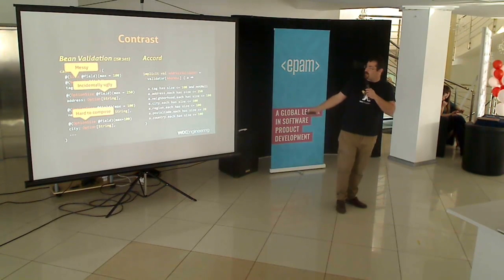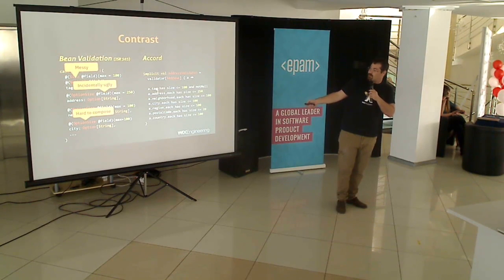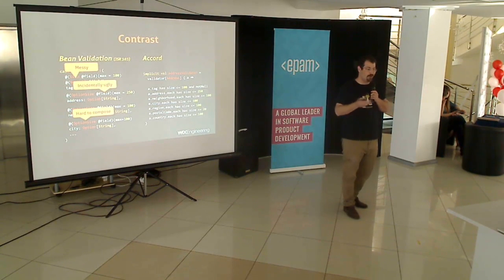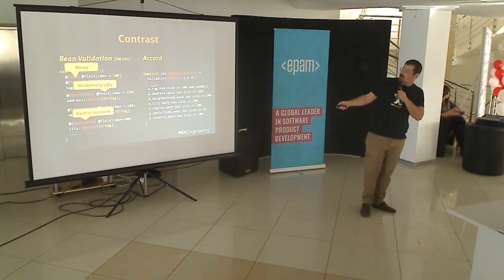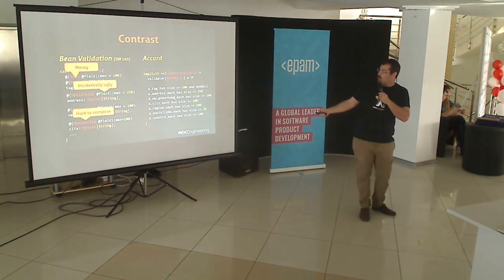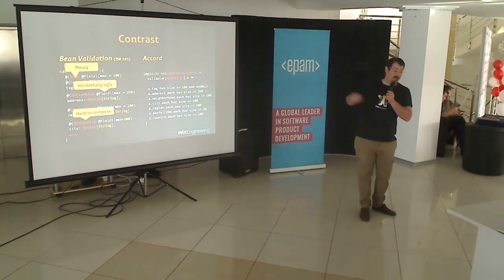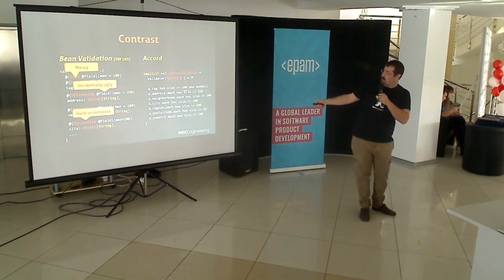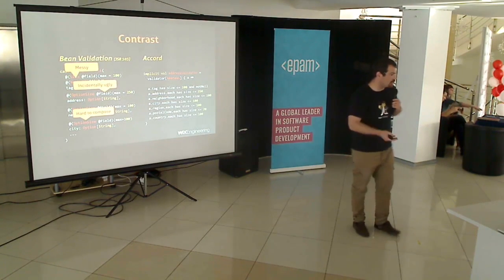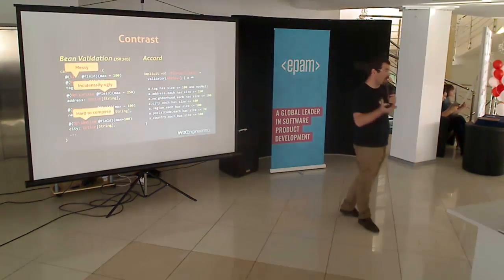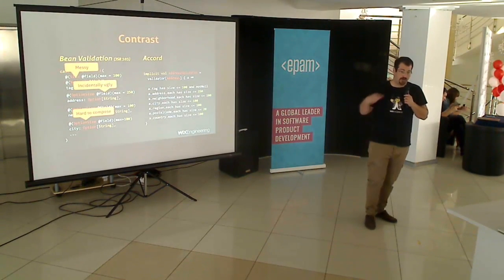With Accord, the same validator would look like this. You have your address validator and you literally have one rule per line. It's a pretty fluent DSL. For instance, your address sample object a.tag has size smaller or equal to 100 and is not null. Or if it's an option you can do a.address, or if it's a collection, same thing — dot each has size, etc. You get this fairly rich domain-specific language to define your validation rules in a pretty concise manner.